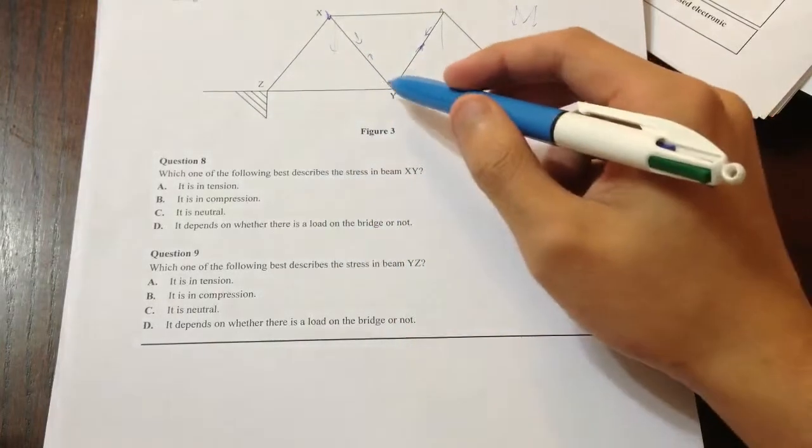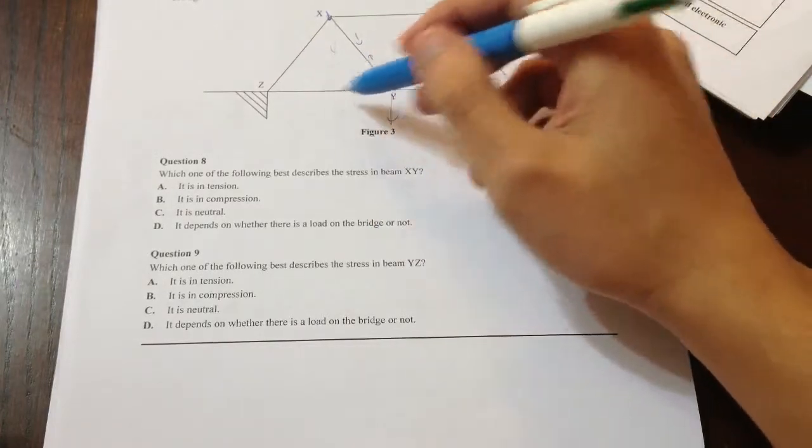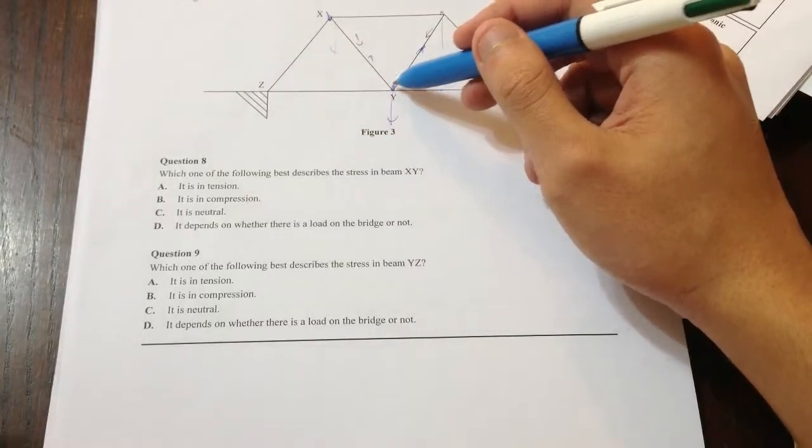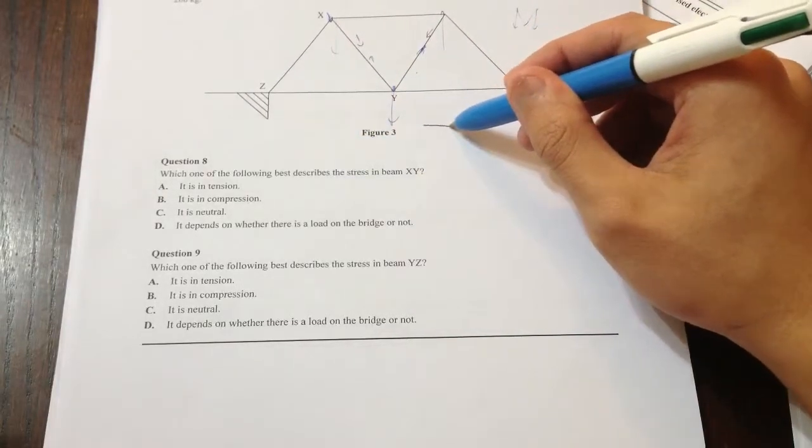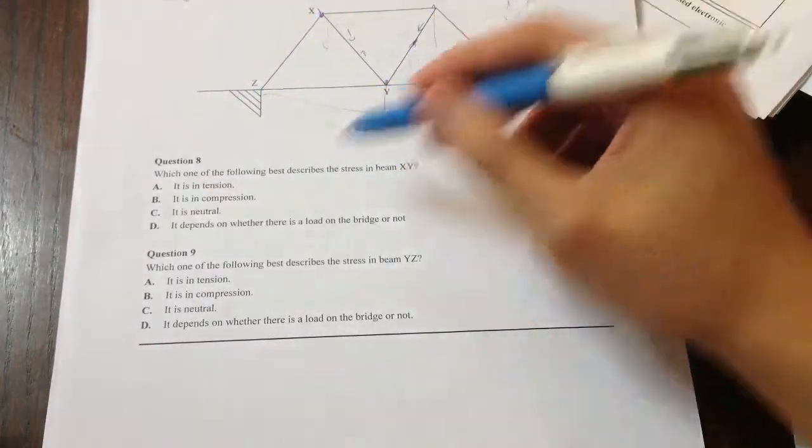So for this, there's a load down here. That's the load of the bridge and that's pulling it down. So if the load, if YZ were to be stretched, if somehow it would start to break, how would it break? It'd break like this. It would be stretched going down. So that's under tension. I guess it's a little bit intuitive now, but I'll try and give you a more concrete example on how to do this.